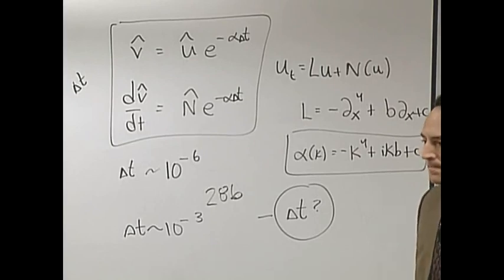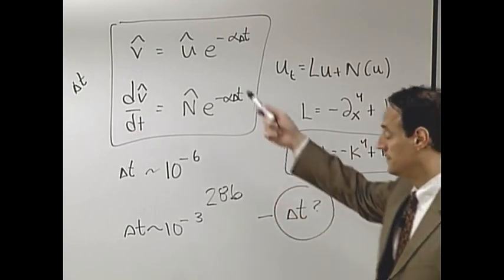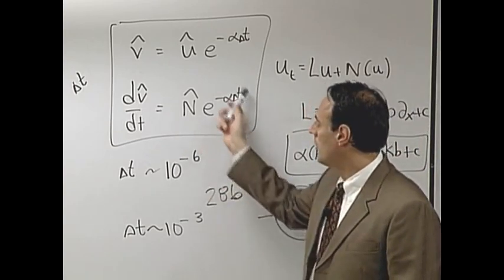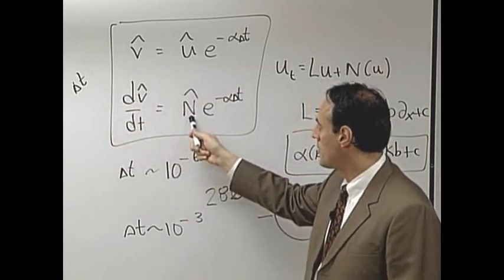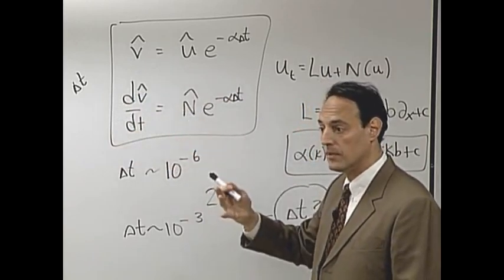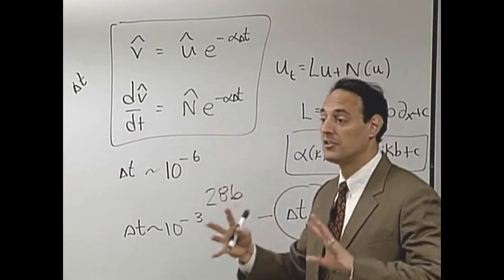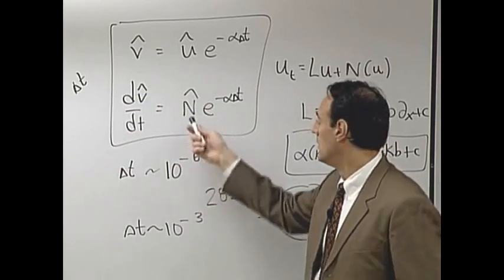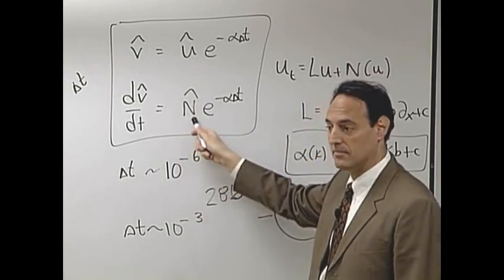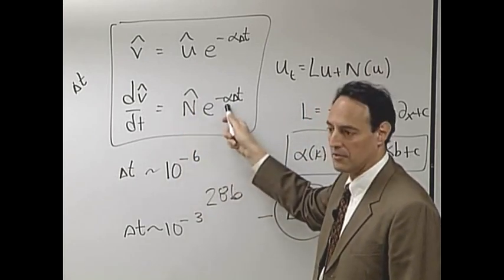You take the Fourier transform and then you have this alpha, and then you do this integrating factor, come up with the v derivative. Okay. Now what happens there? What you're really going to do, here's how the algorithm's going to work: you get your u, you evaluate the nonlinear term with u, you Fourier transform it, now you have N̂. You already knew what alpha k is, right, because you have it in the problem.